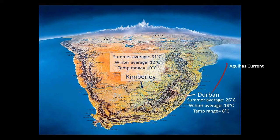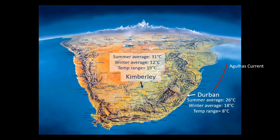Durban's temperature range is about 8 degrees Celsius between summer and winter because it is moderated by the ocean. Kimberley's temperature range is about 19 degrees Celsius, more than double Durban's. We can clearly see here how Durban's temperatures are far more mild and Kimberley's temperatures are far more extreme, due to Durban's closeness to the ocean and Kimberley's distance from the ocean.